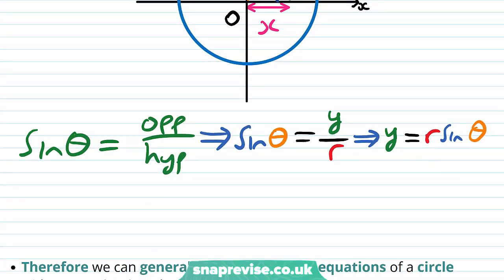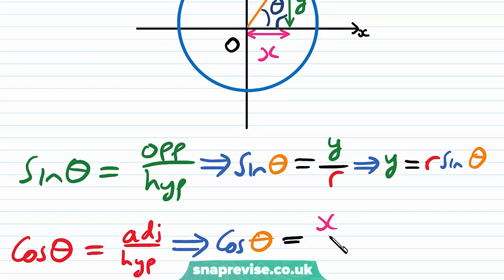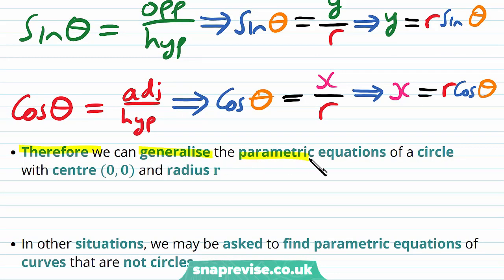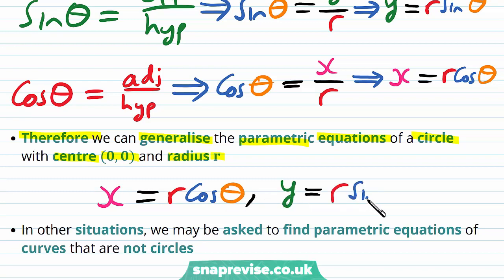Similarly, cosine of theta is given by the adjacent divided by the hypotenuse, so cosine theta equals x divided by r. Rearranging gives us x is equal to r cosine theta. Therefore we can generalise: the parametric equations of a circle with centre (0, 0) and radius r are x is equal to r cosine theta and y is equal to r sine theta.